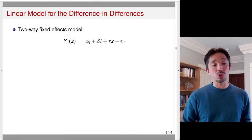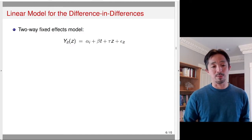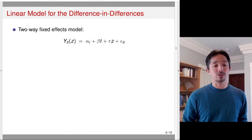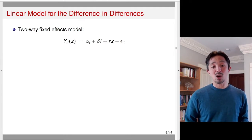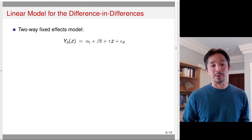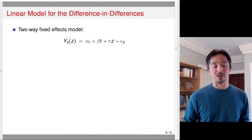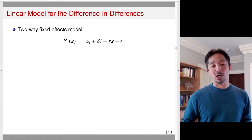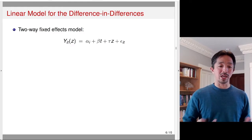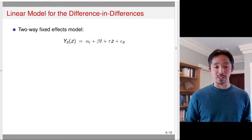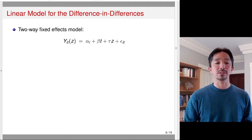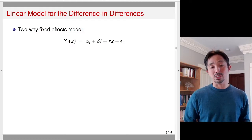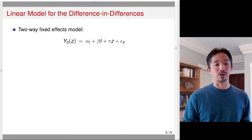Now let's consider the relationship between the difference-in-differences estimator and the linear model. Consider the two-way fixed effects model — a linear model with two fixed effects: a unit fixed effect α_i and a time fixed effect β_t, where T takes values 0 and 1. You have both unit fixed effects and time fixed effects, along with the treatment assignment indicator Z. This model is fitted using least squares (fixed effects regression).